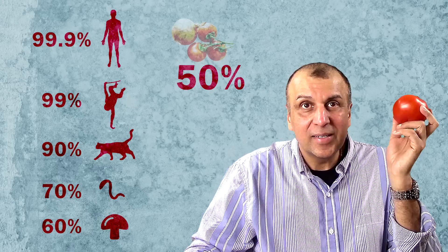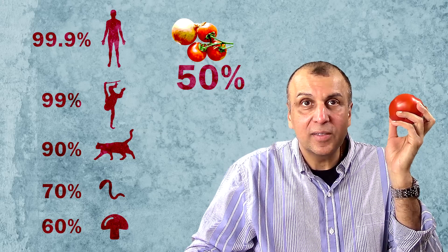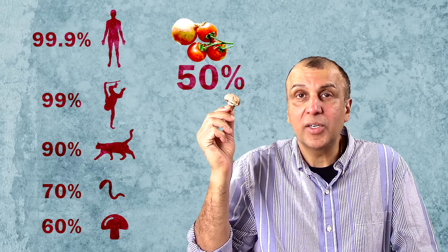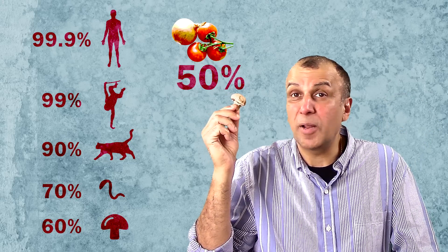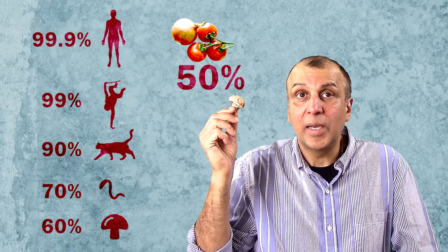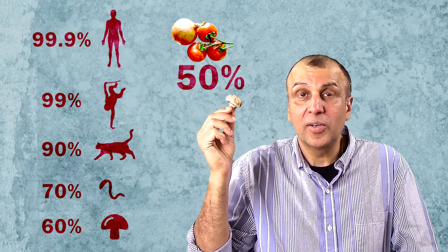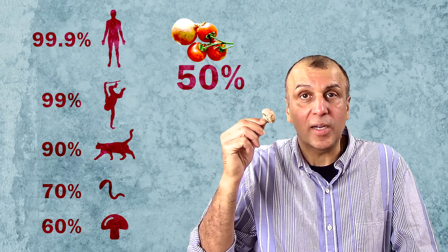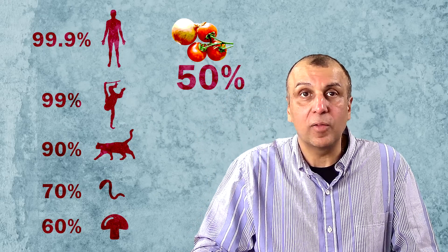We share 99.9% of our genes with other human beings, 99% with chimpanzees, 90% with cats, 70% with a worm, 60% with a mushroom, and 50% with tomatoes and onions. This mushroom and I share a common ancestor that lived about a billion years ago. It was later that mushrooms and animals like us went on a separate evolutionary path.